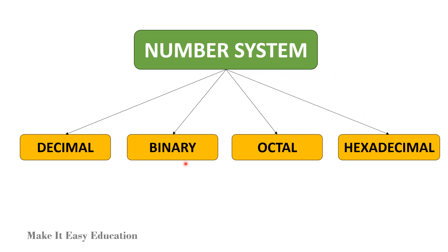Number system is of four types: Decimal, Binary, Octal, and Hexadecimal.